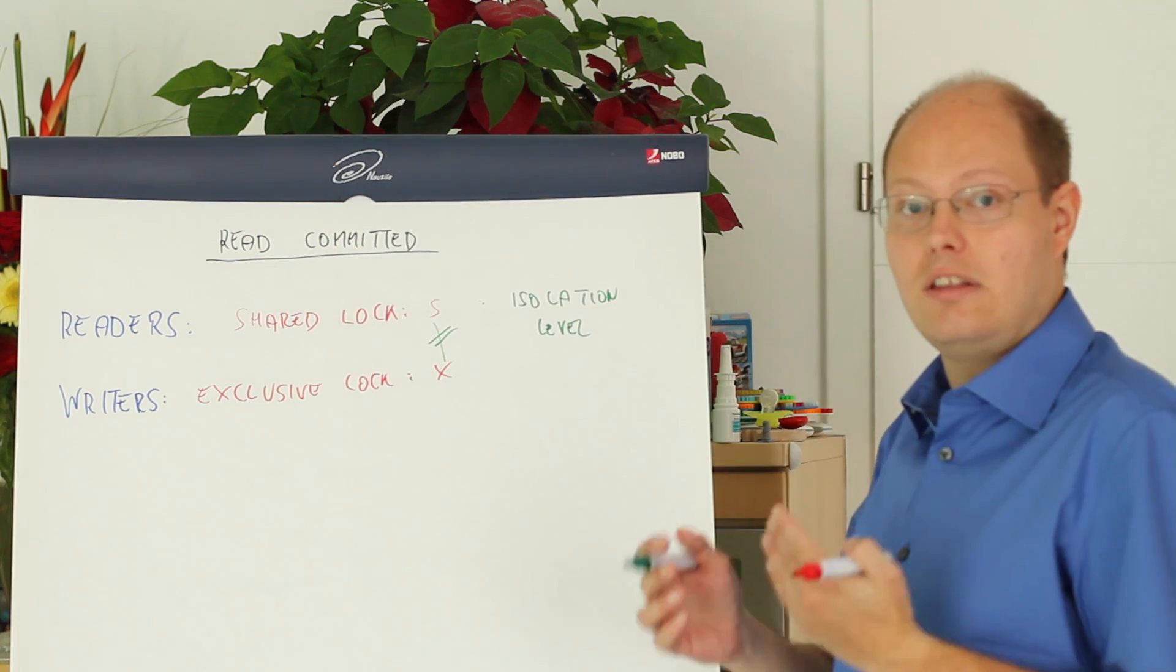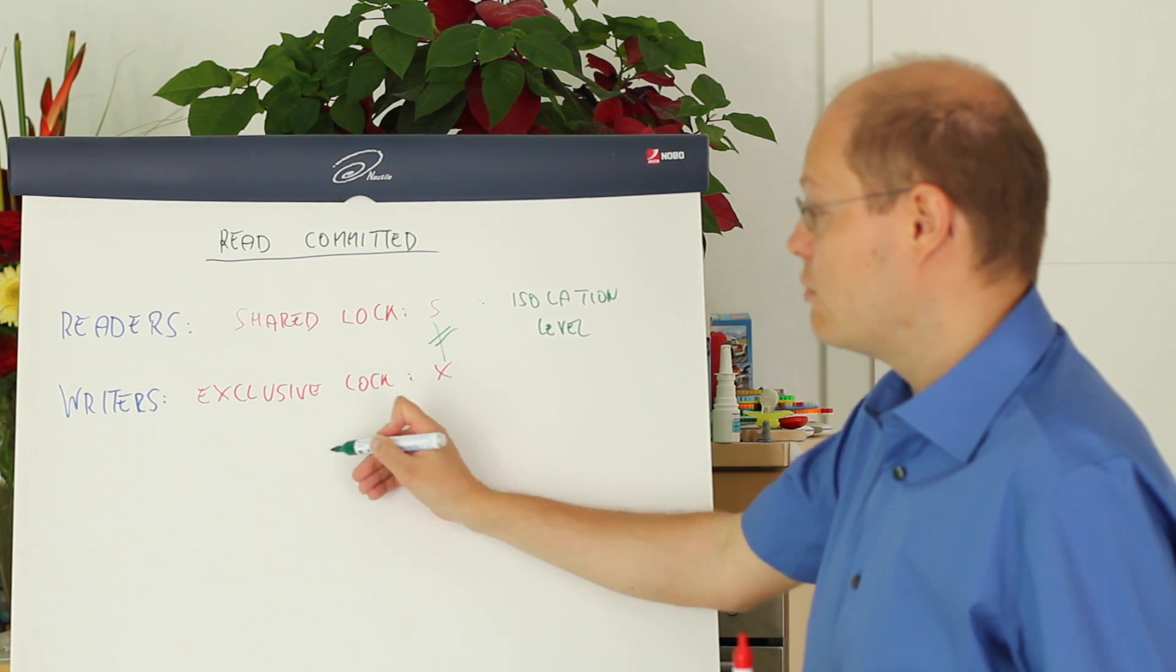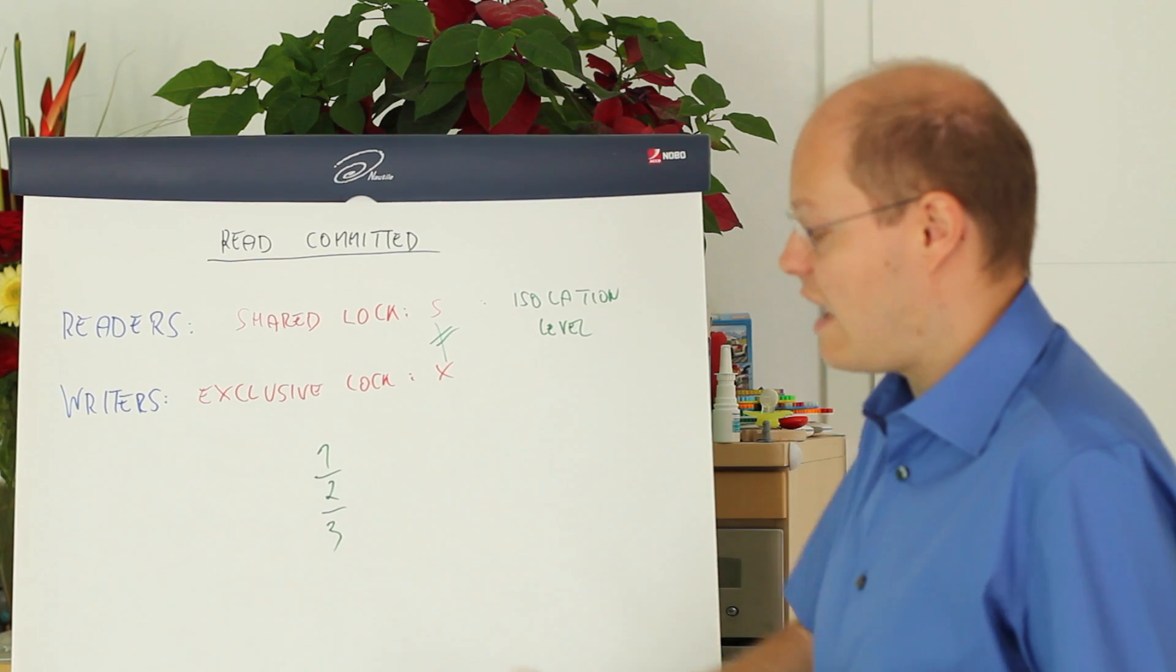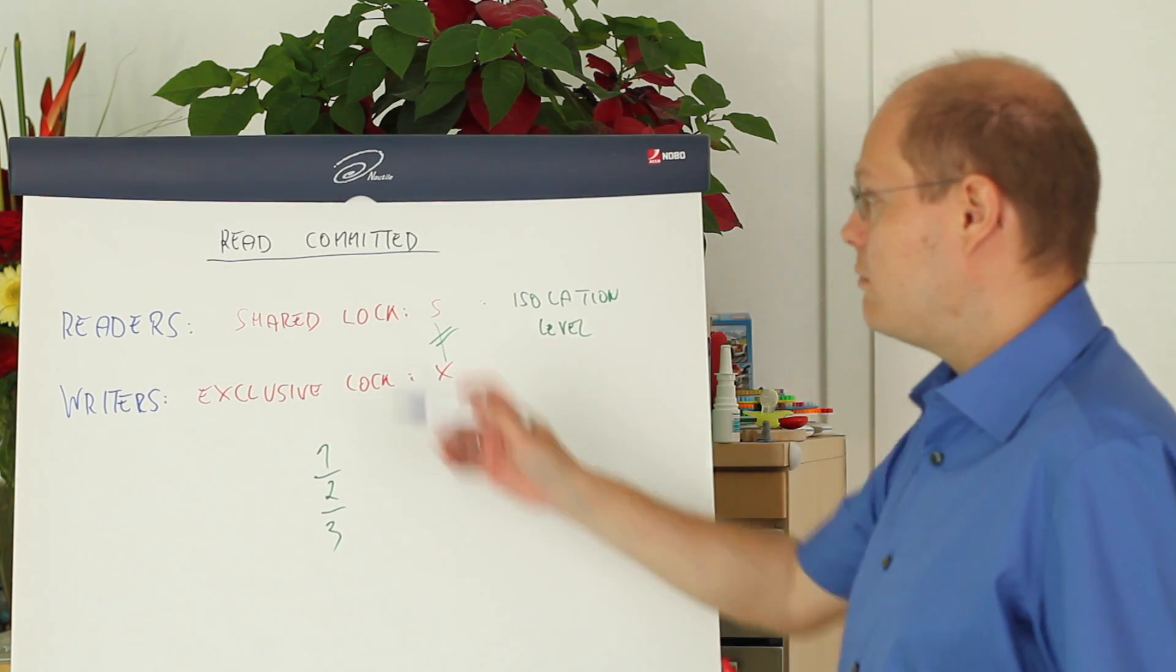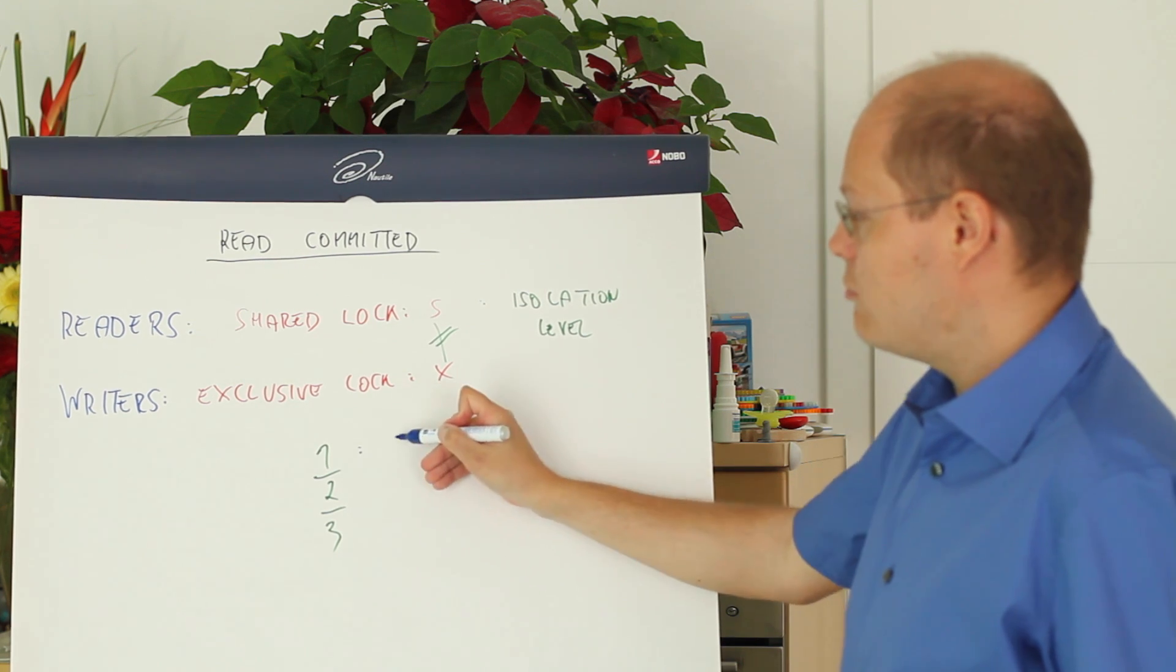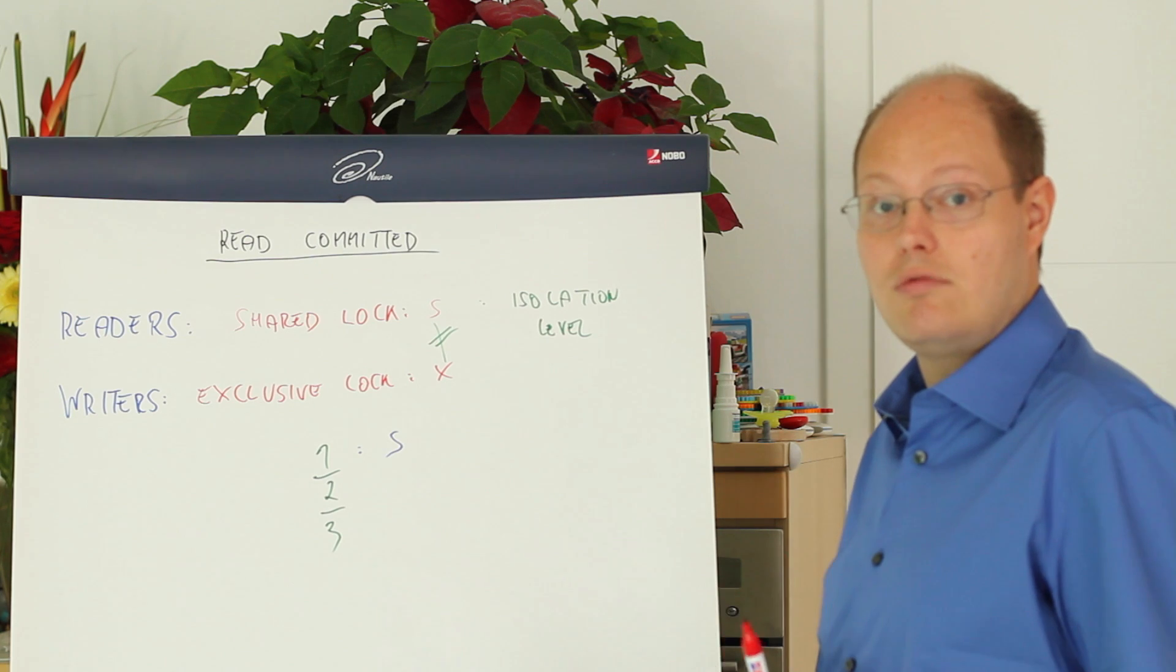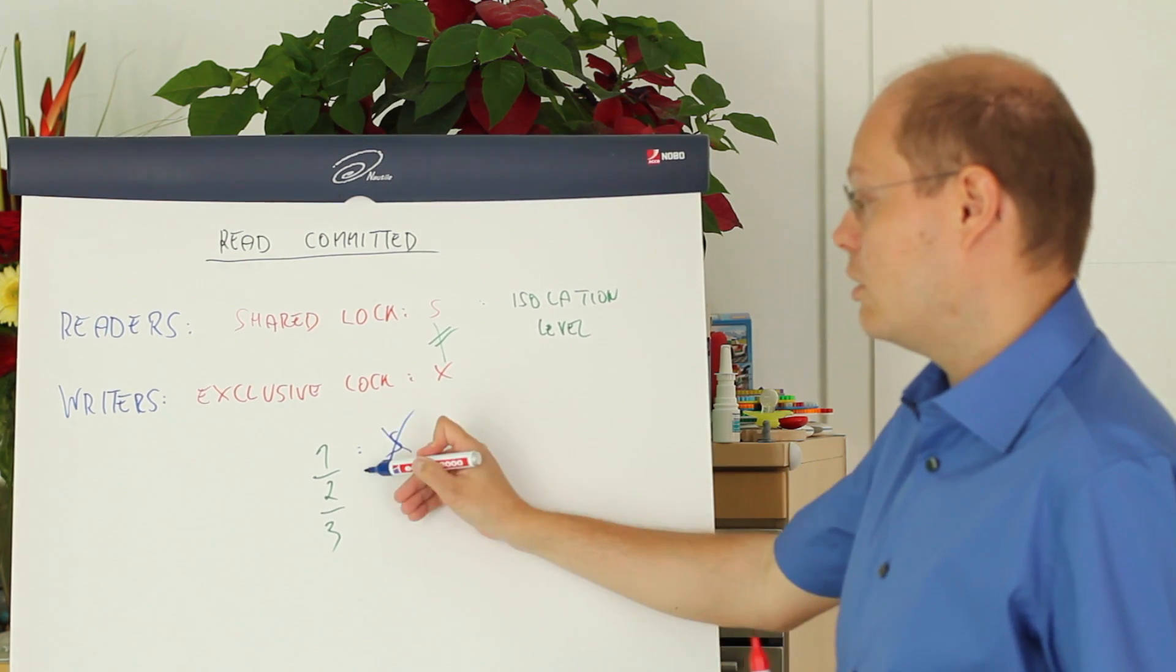Let's move now on to the isolation level read committed which is the default isolation level in SQL Server. Imagine we have a table with three records and we read from that table. By default in read committed SQL Server acquires a shared lock on that first record that we are reading. When we have read that record SQL Server releases the shared lock.